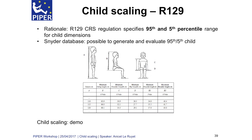There is a possible application for that — for example, for the regulation R129. This regulation deals with a certain range of child dimensions like the 95th percentile and the 5th percentile. Thanks to the Snyder database dimensions, it's possible to generate a child with the dimensions requested by this regulation, like the stature, the sitting height, the shoulder breadth, the hip breadth, or the thigh clearance. I'm going to show you just right now how it works.